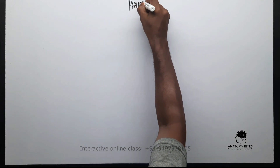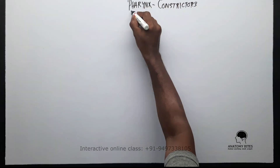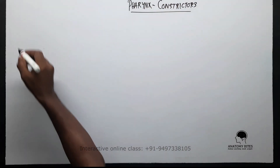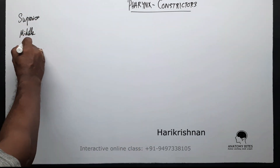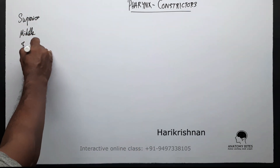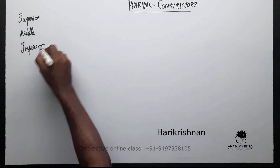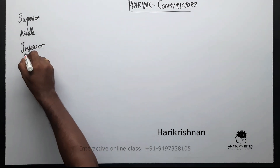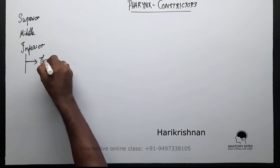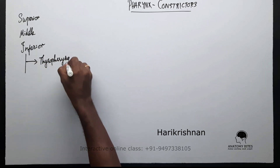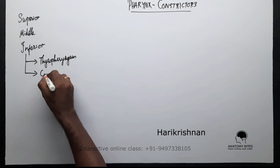Hello friends, today we are going to study about the constructors of pharynx. There are basically three constructors: superior, middle, and inferior. The inferior constructor is further subdivided into thyropharyngeus and cricopharyngeus.